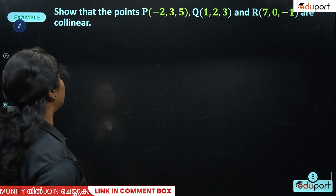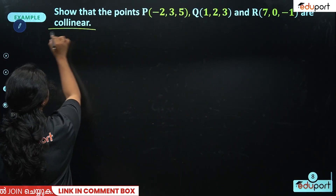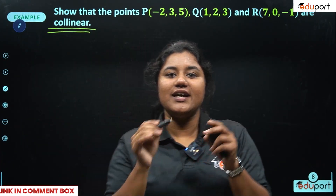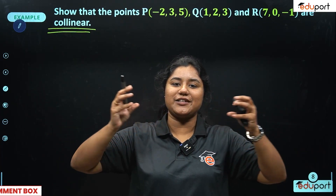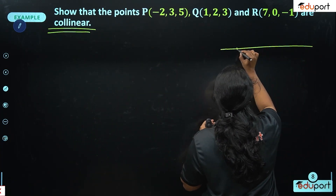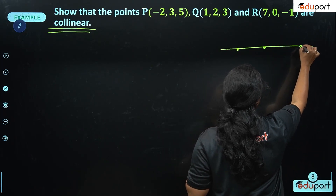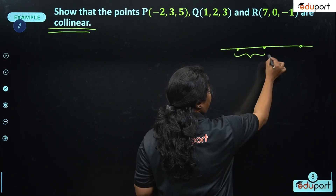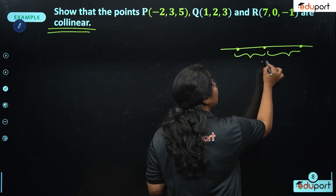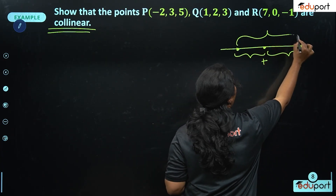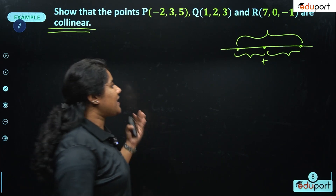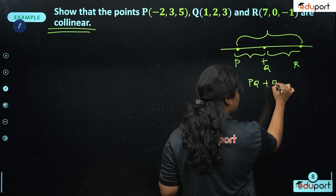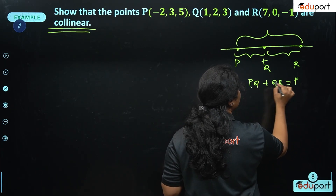We always get questions with 3 points — are they collinear? Collinear means the points lie on a straight line. To prove 3 points P, Q, R are collinear, we show that PQ + QR = PR. We calculate all three distances and verify that the sum of two equals the third.